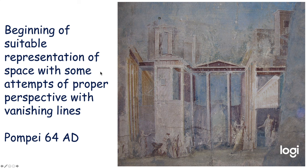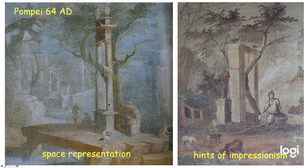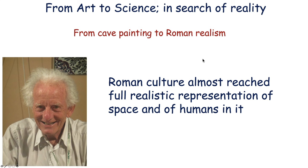Pompeii is a good example: some paintings of spaces with lines of buildings follow pretty much what was later discovered to be the rules of perspective, with a vanishing line going all the way to the horizon. We can see that the art became more realistic with good spatial representation, even in the absence of very strong lines, and some hint of impressionism — you can see the trees here, not in detail, but just a sense that what you see is what your brain tells you to see. We'll return to this in more modern times. I'd like to end this first part of my talk — from Cave Painting to Roman Realism — by concluding that Roman culture almost reached full realistic representation of space and of humans within it.